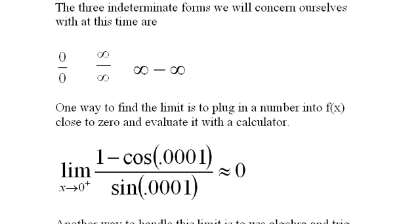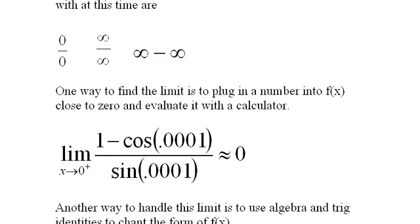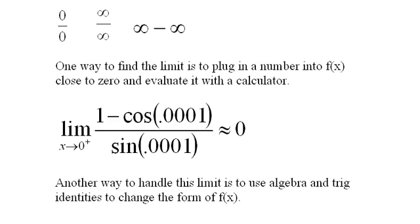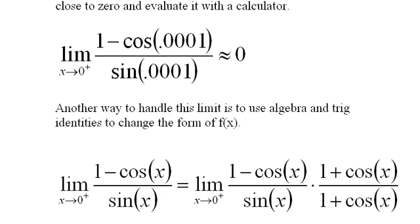Another way to handle this limit is to use algebraic and trig identities to change the form of the function. Let's take a look at this. I've got 1 - cos(x) over sin(x), and I realize that if this were 1 - cos²(x), I could change it to something else. And so I multiply top and bottom by the conjugate, 1 + cos(x) over 1 + cos(x).